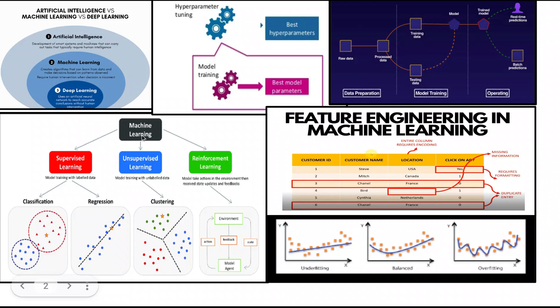Another type is unsupervised machine learning. Here, the computer is not given any labeled data — the computer must learn to find patterns in data on its own, because this is unstructured data. We cannot give labels the same way as in supervised learning. This type of learning is often used for tasks such as clustering and dimensionality reduction.